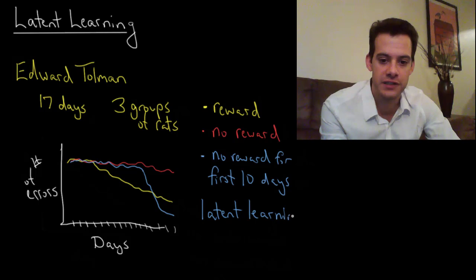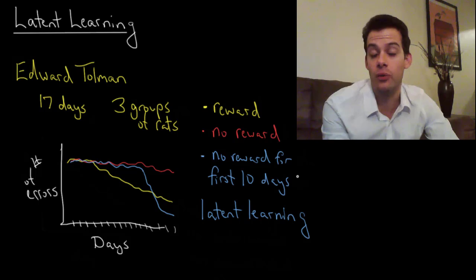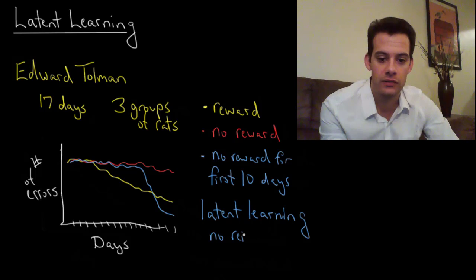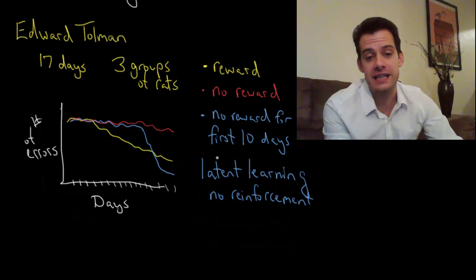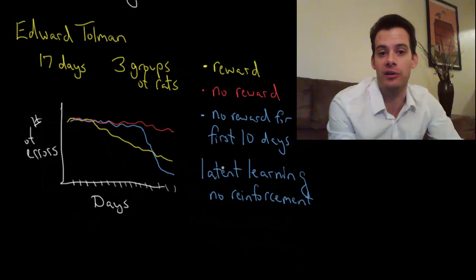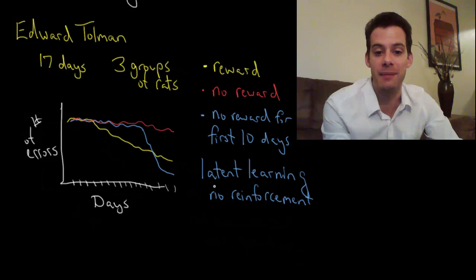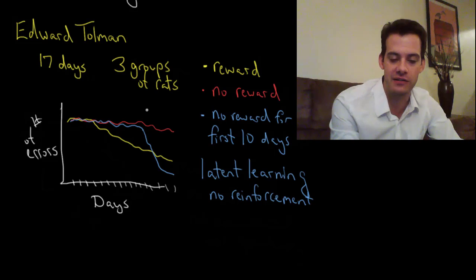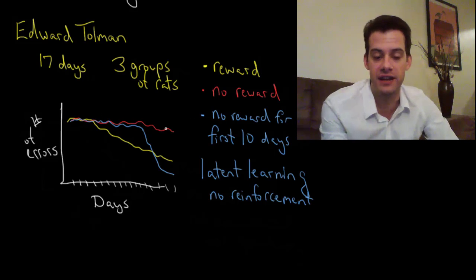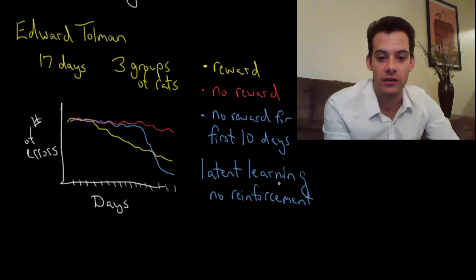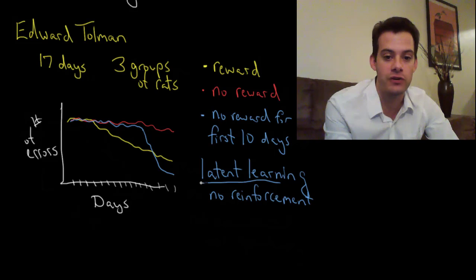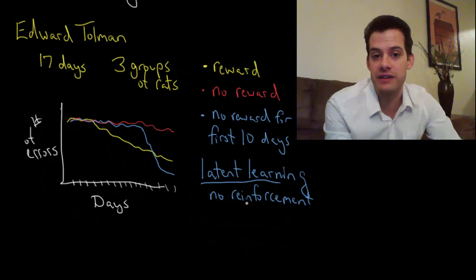Latent learning refers to learning that occurs without reinforcement. When the rats are just wandering around in this maze with no reinforcement, they're actually still learning about the maze. The reason that early behaviorists wouldn't think that they were learning is the rats didn't have any reason to demonstrate that. The second group of rats that got no reward, they're actually learning too but they never got the opportunity to show it. Learning occurs without reinforcement but it's not demonstrated until there's a reason to do so.